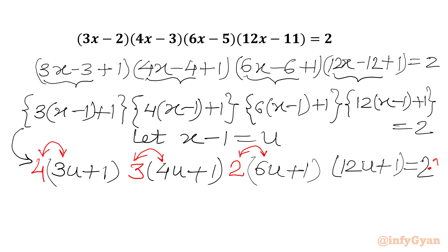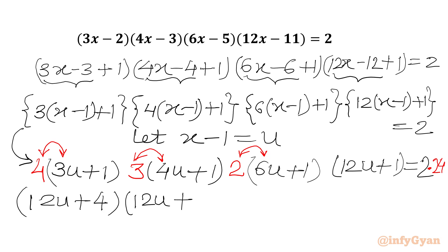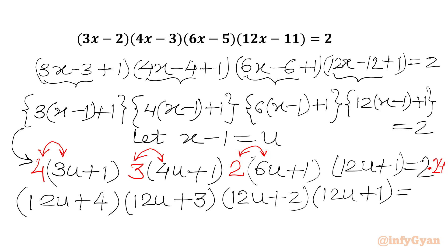So I need to multiply 24 on the RHS also. We can write our equation: 4 times (3u plus 1) gives 12u plus 4. Then 3 times (4u plus 1) gives 12u plus 3. Then 2 times (6u plus 1) gives 12u plus 2. Then we have 12u plus 1, and RHS is 48.